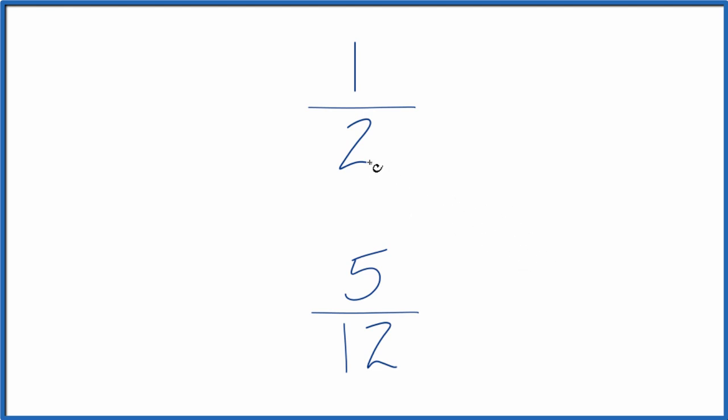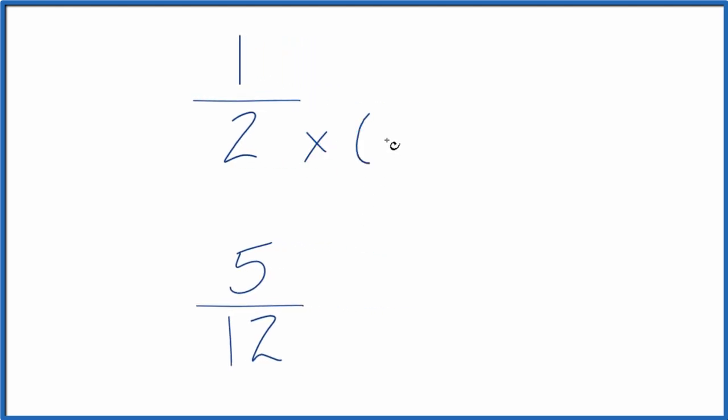So let's do this. I know that 2 will go into 12 evenly. 2 times 6 is 12. So 2 times 6, that would equal 12. That'd be my denominator here, and over here I just have 12 as my denominator.